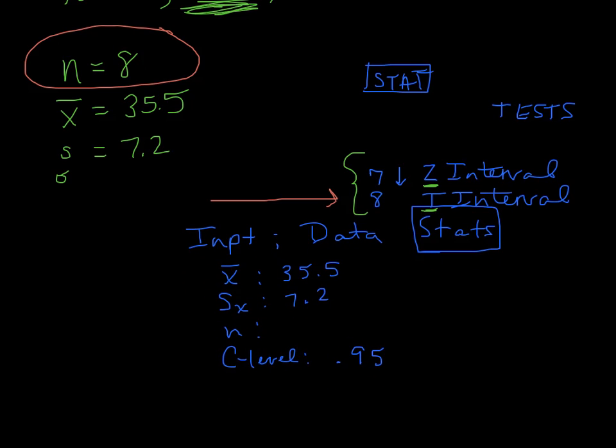So what you get when you put all that in, it calculates the error for you. It adds and subtracts the error from that sample mean. And it comes up with a confidence interval of 29.481 to 41.519.